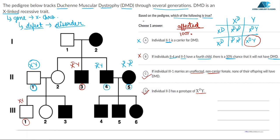Our question was based on the pedigree: which of the following is true? The answer is option C and option D are both true. That's it — thank you!